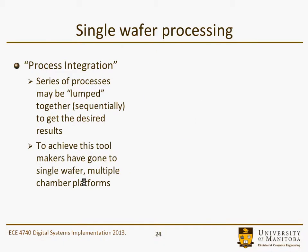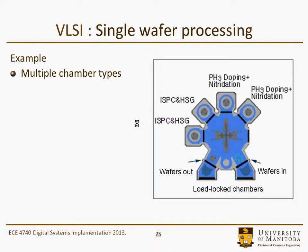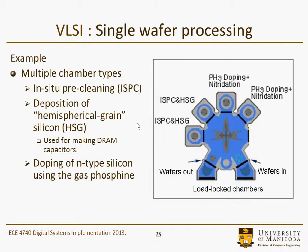The approach has moved to single-wafer but multiple-chamber platforms, with the wafers never exposed to the atmosphere as they're processed in each chamber depending on the layer being deposited. Here's a schematic example of a multiple-chamber type with in-situ pre-cleaning via plasma, deposition of hemispherical grain silicon (polysilicon used in making a DRAM capacitor), N-type doping of silicon using phosphine gas for phosphorus doping, and a nitrogenation step for either silicon or an oxide.